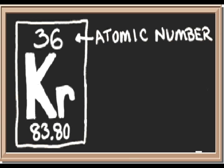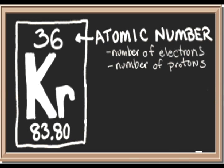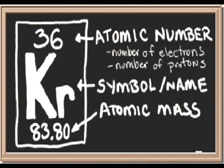Krypton. The number up here is the atomic number — it represents the amount of electrons and protons the atom has. So Krypton has 36 protons and electrons. Kr is the IUPAC symbol name for this element. The number under the symbol represents the atomic mass in grams per mol.